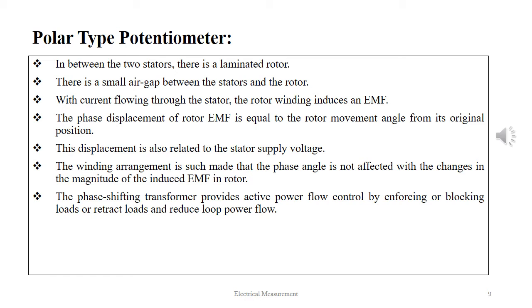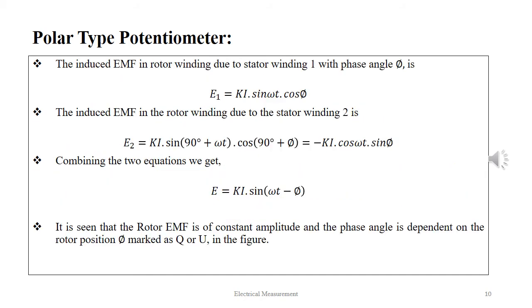The phase shifting transformer provides active power flow control by enforcing or blocking loads or retract loads and reduces the loop power flow. The induced EMF in rotor winding due to stator winding 1 with phase angle φ is given as E₁ = KI·sinωt·cosφ.